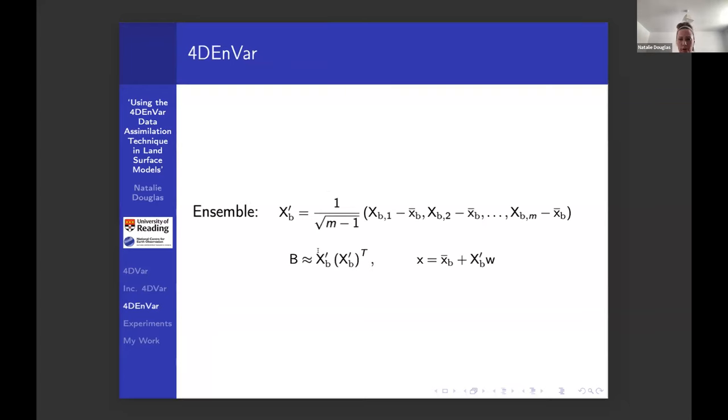Then the magic comes in when you do 4D-EnVar. This is where you introduce the ensemble. Instead of just an increment here, delta X, we're assuming that we can take an ensemble and then the ensemble mean is going to be our background state. These are the ensemble perturbations defined by taking an ensemble from parameter space. The background state is updated by some linear combination of the perturbations to your ensemble, and this W here is actually an ensemble space, so it's a smaller problem.